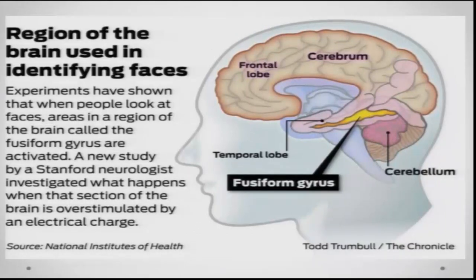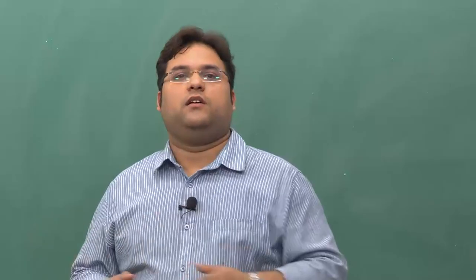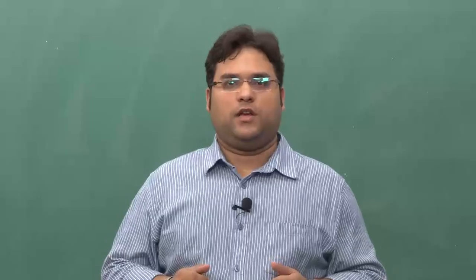To summarize, we have talked about theories of object recognition and seen that object recognition can be achieved by a combination of top-down and bottom-up approaches. We also saw that perception of faces is a special case of object recognition, because faces carry much more social salience and information compared to other objects we interact with. Thank you.